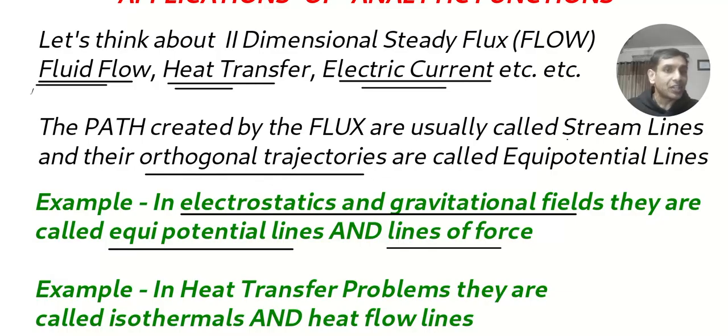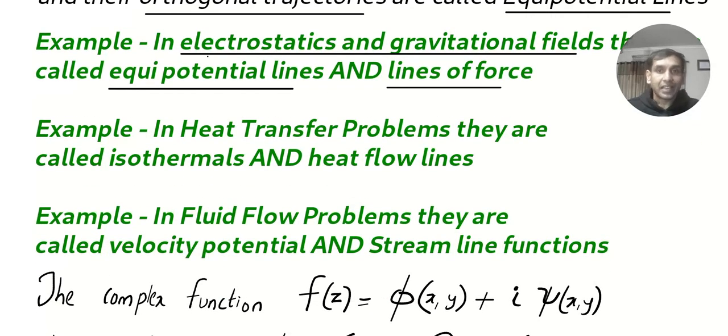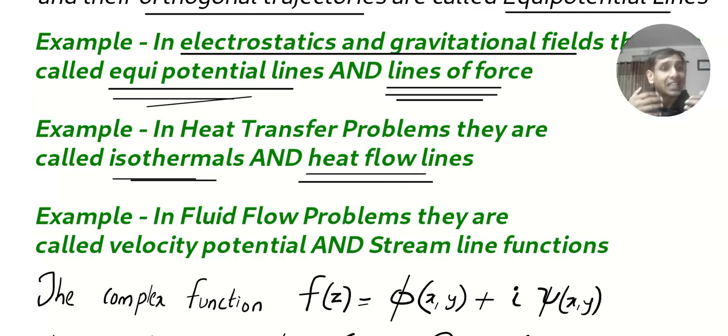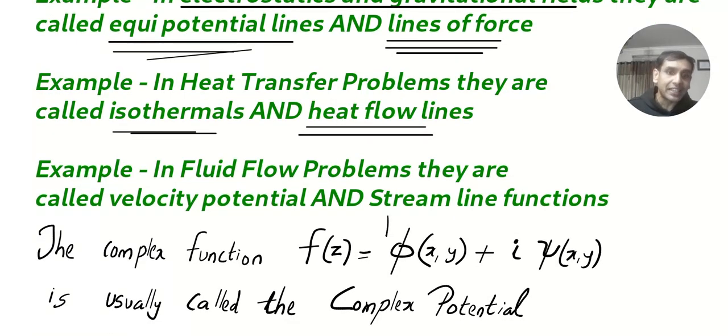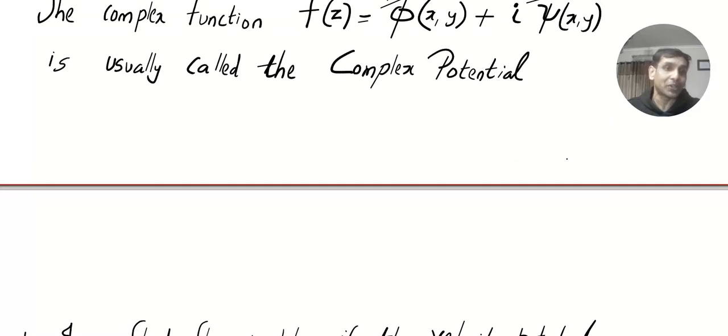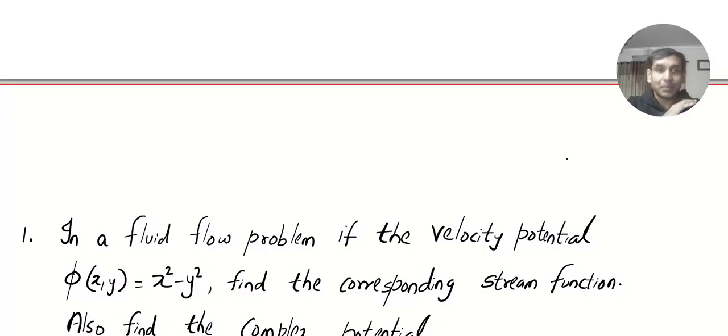In the problem, they are going to give you one of them and ask the other one. In fluid flow, in heat transfer, in electric current, they are always going to ask you find the orthogonal trajectory. So basically they are called streamlines and equipotential lines. Now specifically, in electrostatics, equipotential line and line of force. In heat transfer, isothermal and heat flow lines. Now, look at this. As a mathematician, I don't care. They are giving me the real part and they call it with the funny letter phi. And they will ask me find psi or they will give me psi and find phi. But all I see is they have given me u and I will find v.